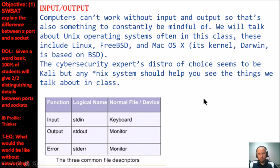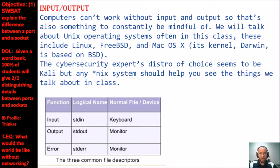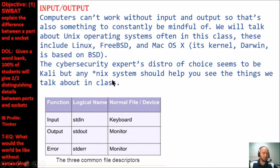There are no computers without inputs and outputs — sockets provide us an ability to direct those inputs and outputs better. Later we'll talk about Unix operating systems often in this class: Linux, FreeBSD, Mac OS. The security experts' distribution of choice seems to be Kali. Any Unix-like system should help you see the things we talk about in class. If you're on message boards or Reddit learning about cybersecurity and see an asterisk and 'nix,' that means it's a Unix-like system.